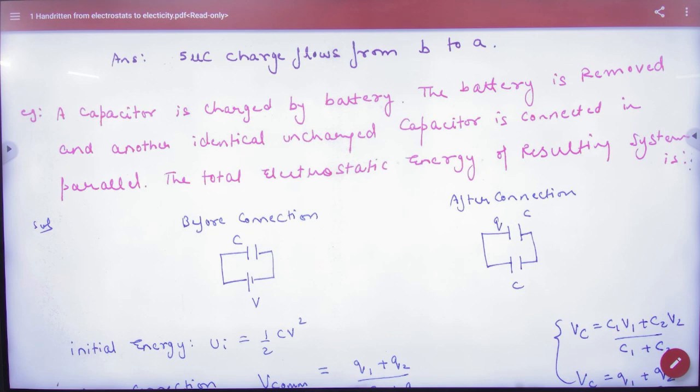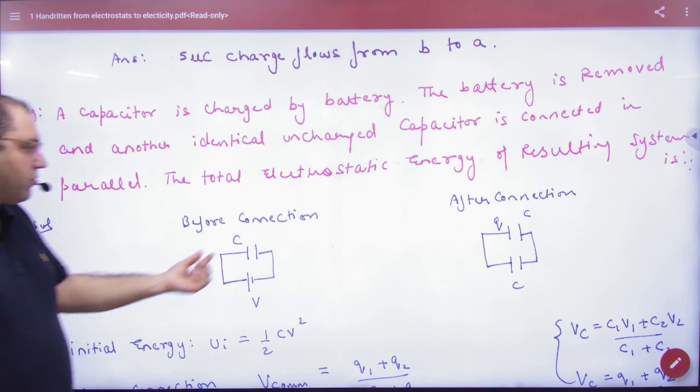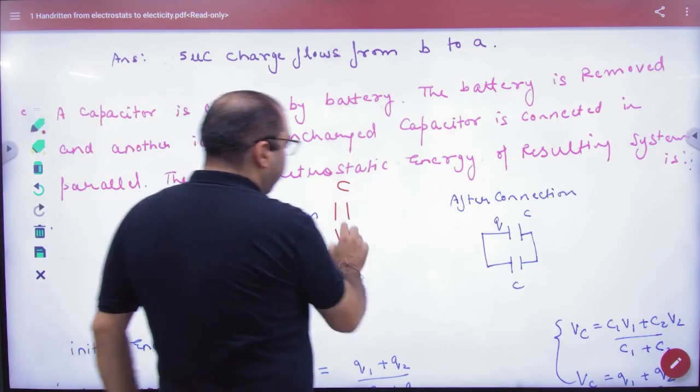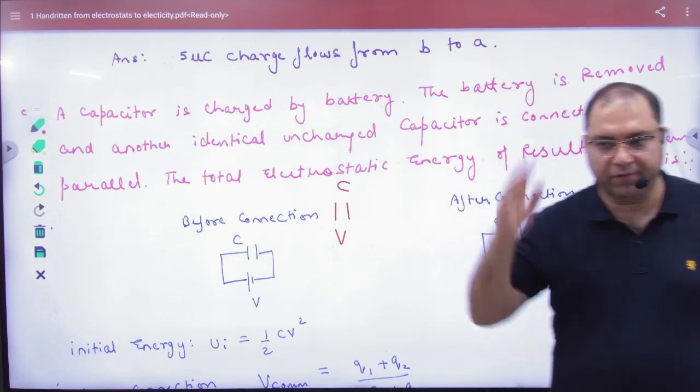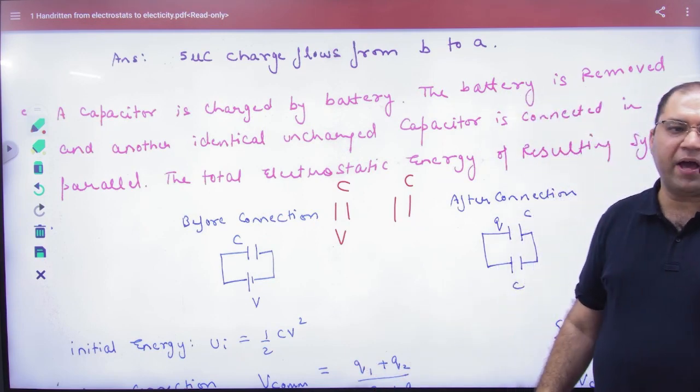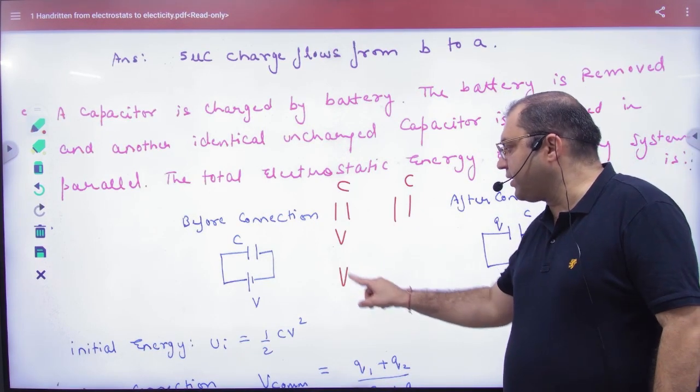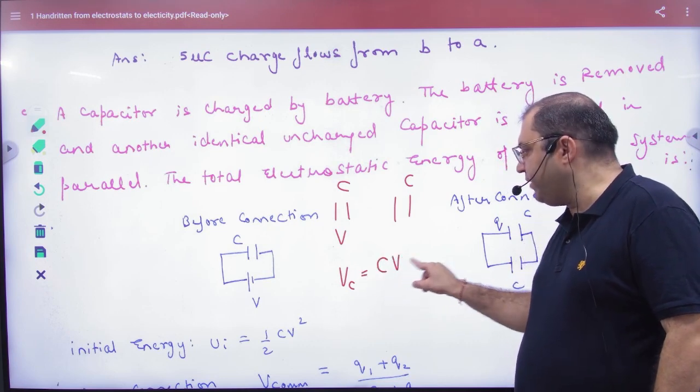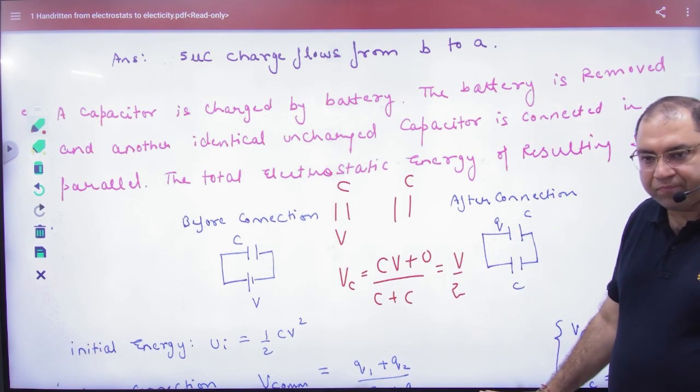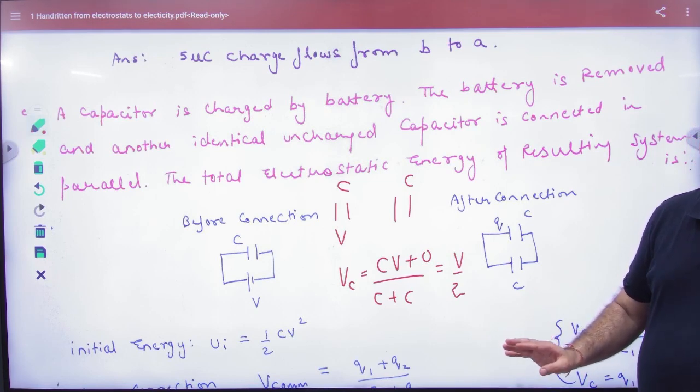Question है कि capacitor is charged by a battery. The battery is removed and another identical uncharged capacitor is connected in parallel. So we have charged one capacitor C to V battery, so C knows V knows. One capacitor, another capacitor has uncharged C, V has not taken it in parallel. So in parallel connect, common potential what will happen: C into V plus zero divided by C plus C, so what will happen, V by two. So parallel combination after connecting, the potential both V by two, V by two.